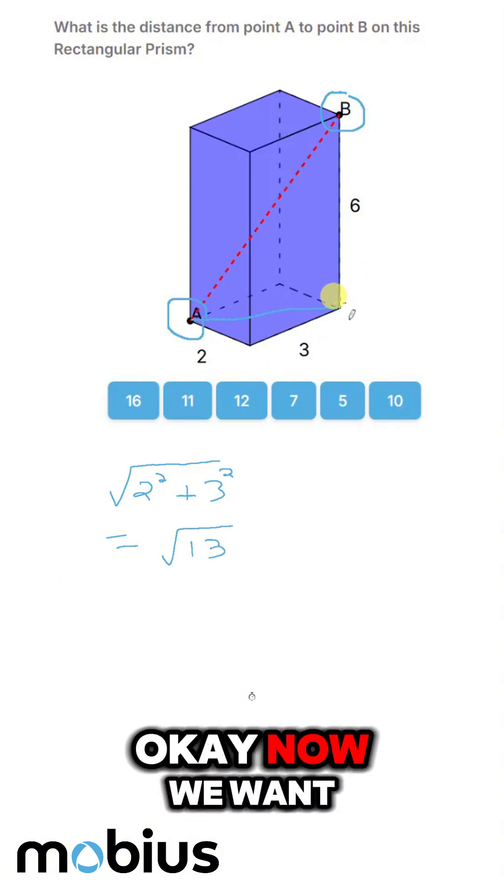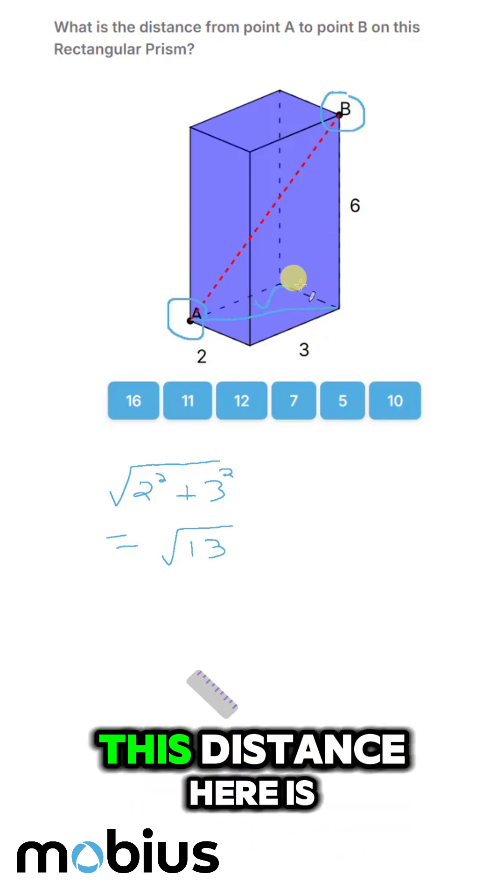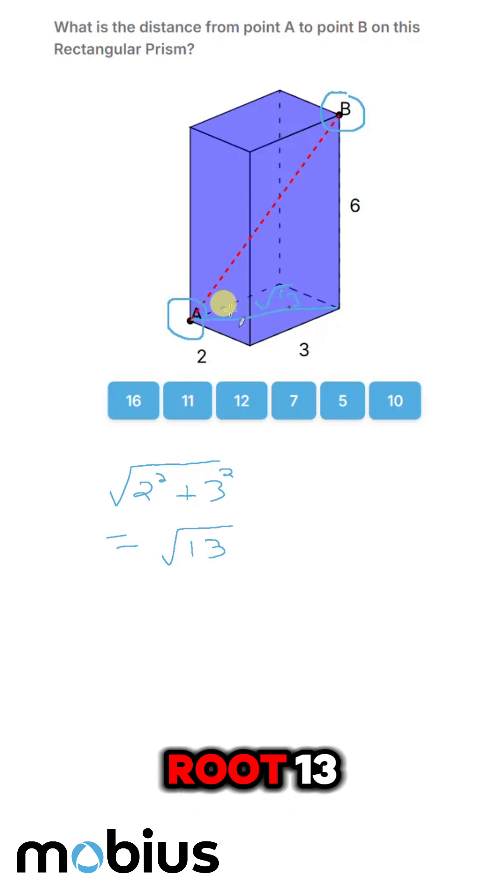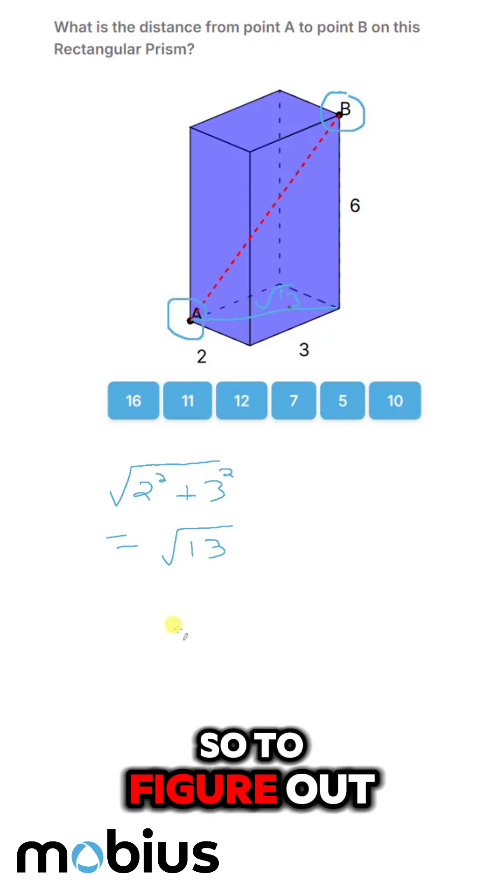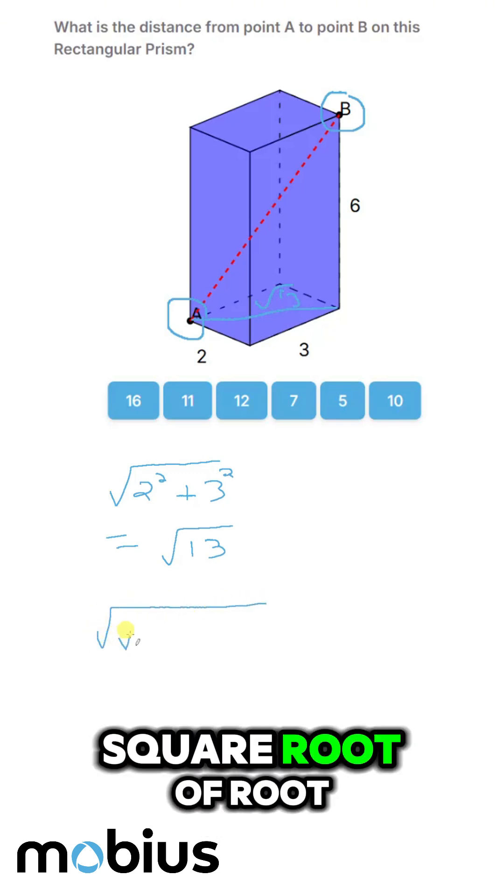Okay, now we want to go all the way up to point B. So we know that this distance here is root 13, so to figure out this distance, we can use Pythagoras again.